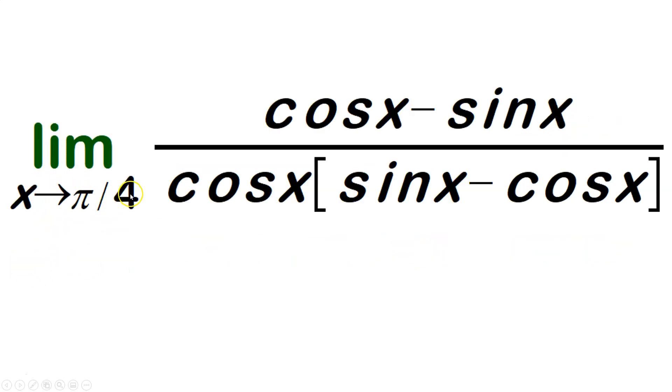The limit as x approaches π/4. In the numerator, I'll leave it as cosine x minus sine x after simplifying, and in the bottom it's cosine x times (sine x - cosine x). Now look at cosine x minus sine x and sine x minus cosine x. They're the same, you just have to flip them and change the signs.